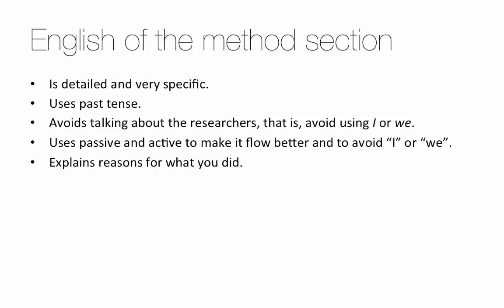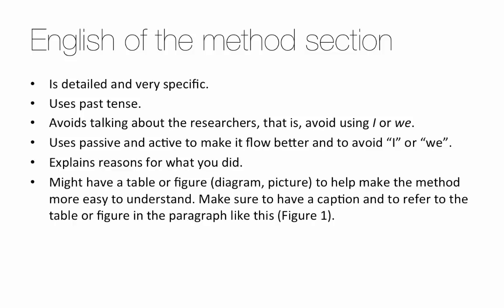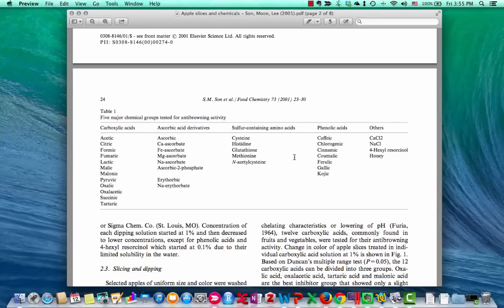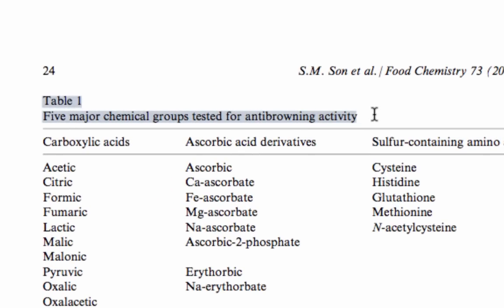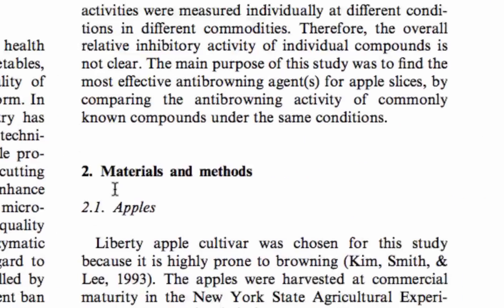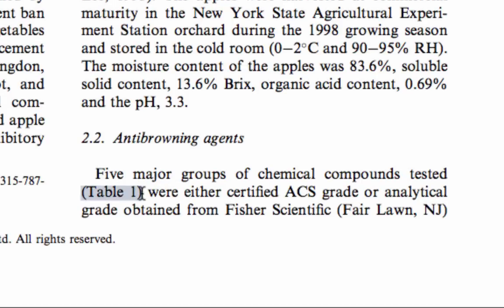To review: the Methods section tends to be detailed and specific, uses past tense, avoids talking about the researchers — avoid using 'I' or 'we' — uses passive and active to make it flow better and to avoid 'I' and 'we,' and explains the reasons for what you did. Also, you might have a table or a figure to help make the method easier to understand. If you do, make sure to have a caption and to refer to the table or figure in the paragraph, like this, with 'Figure 1' or 'Table 1' in parentheses.